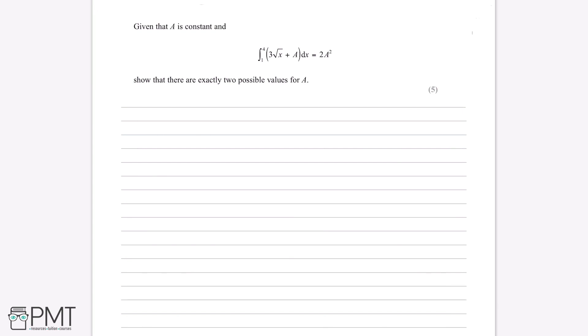So the first thing we would want to do is rewrite 3 root x plus a in a form that's a bit easier to integrate. The square root of anything can also be written as it to the power of a half. It means the exact same thing, it's just another way we can write it. But writing things in terms of powers makes them a lot easier to integrate. So if we write 3 root x as 3x to the power of a half, it becomes a lot easier for us to do our calculation.